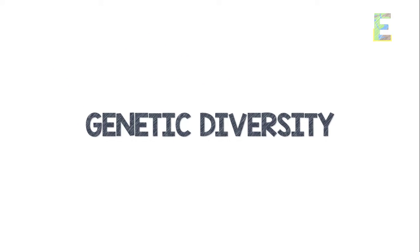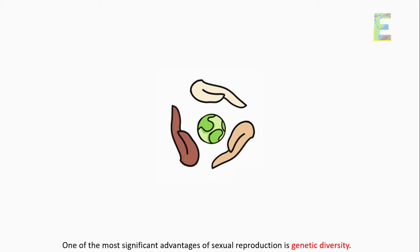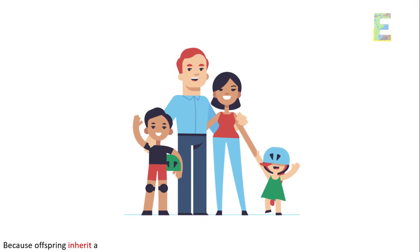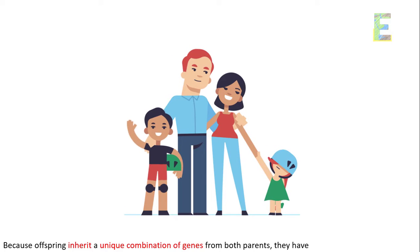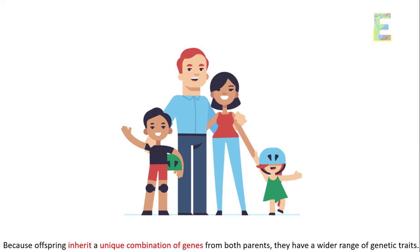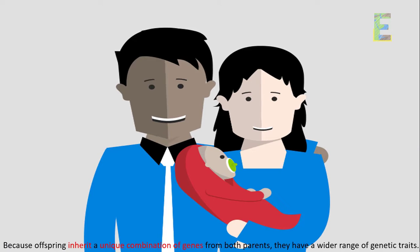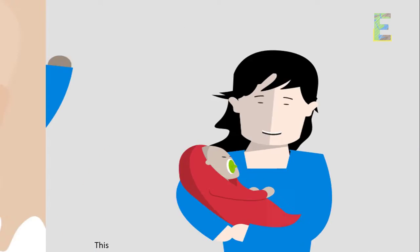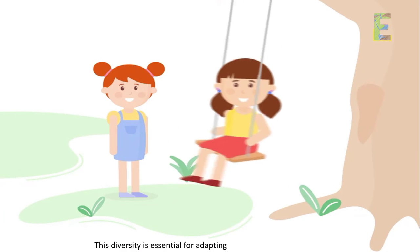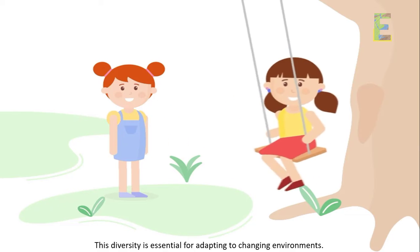Genetic diversity — one of the most significant advantages of sexual reproduction is genetic diversity. Because offspring inherit a unique combination of genes from both parents, they have a wider range of genetic traits. This diversity is essential for adapting to changing environments.